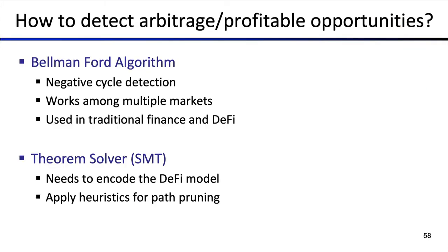How can we detect arbitrage or profitable opportunities in DeFi? In this lecture, we'll be looking at mainly two methods. The first one is the Bellman-Ford algorithm. The second one is the theorem solver, also typically referenced as an SMT solver in the literature. The Bellman-Ford algorithm allows you to find negative cycles in a graph, so it allows you to identify whether you can do a circular arbitrage trade. The beauty is it works among multiple markets and multiple assets.